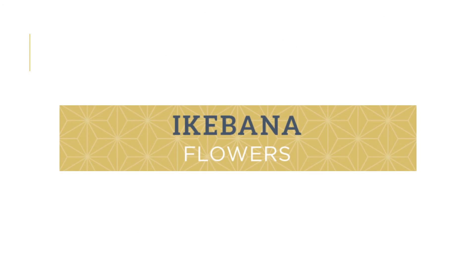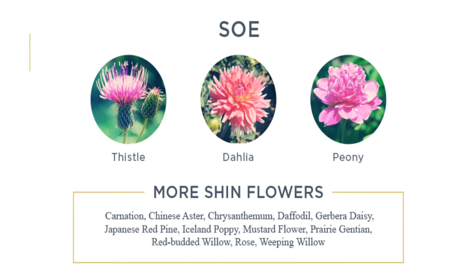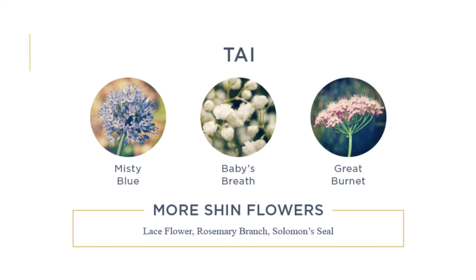Common flowers used in ikebana include: for the tallest position (shin) — peach blossom, flowering plum, and flowering dogwood; for the medium height (so) — thistle, dahlia, and peony; and for the shortest position (tai) — misty blue, baby's breath, and great brunette.